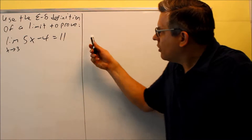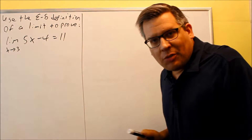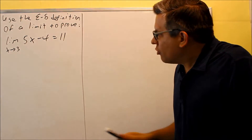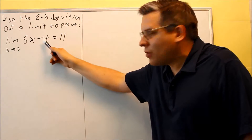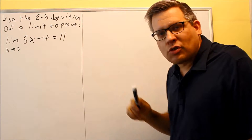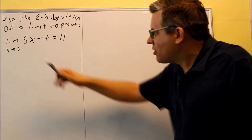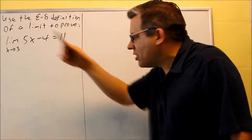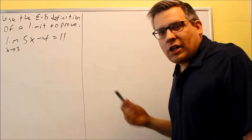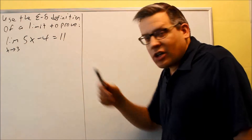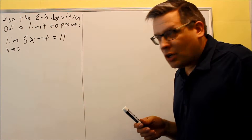In this problem we're actually going to be proving that a limit is true. We're going to prove that the limit as x goes to 3 of 5x minus 4 equals 11. Unfortunately, it's not enough just to plug 3 in and get 11 — that's calculating the answer, not actually showing it.